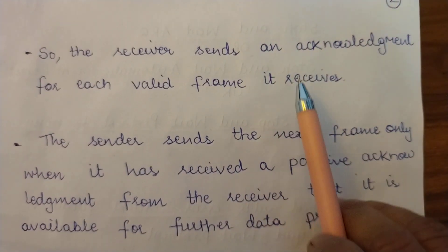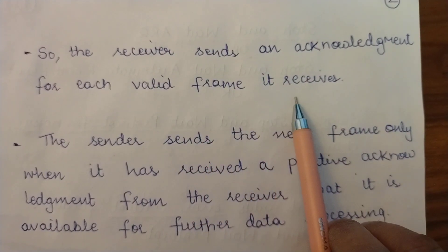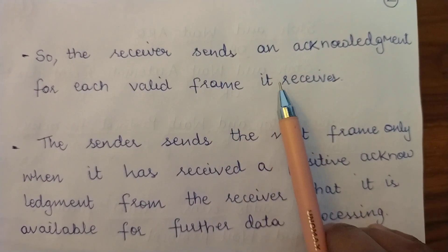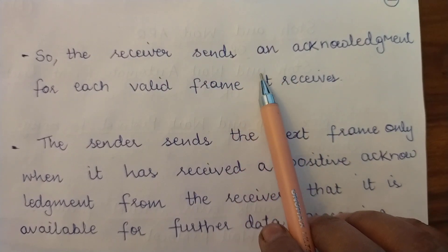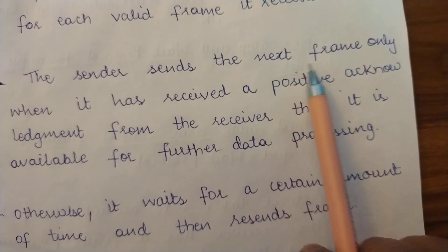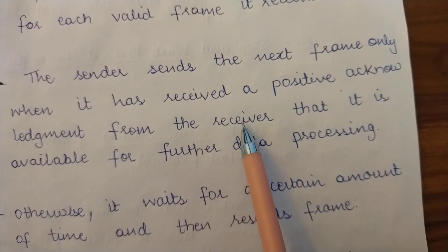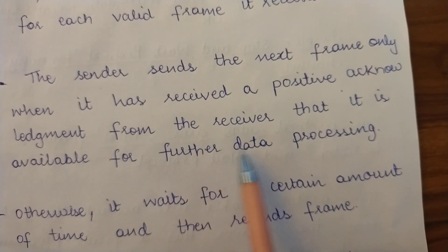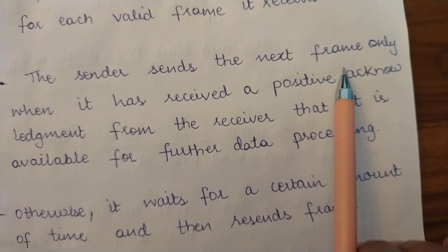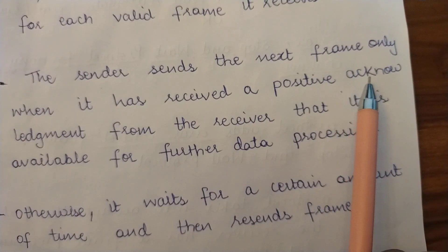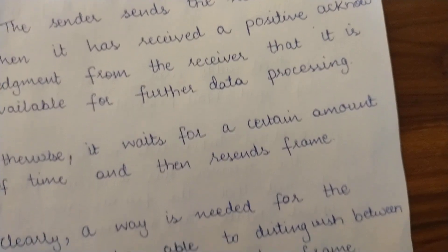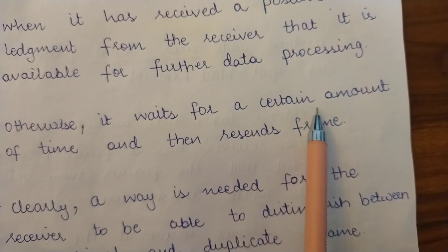The receiver sends an acknowledgement for each valid frame it receives — that is, as long as the frame is not damaged. If a proper frame has arrived, the receiver sends an acknowledgement to the sender. The sender sends the next frame only when it has received a positive acknowledgement, meaning an acknowledgement confirming that the frame was received and is in proper condition.